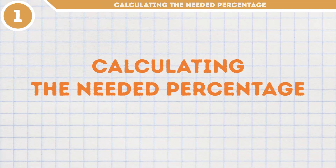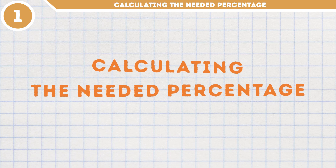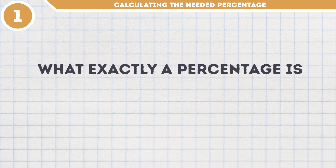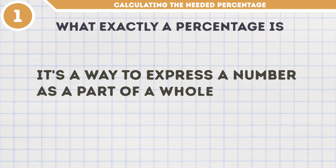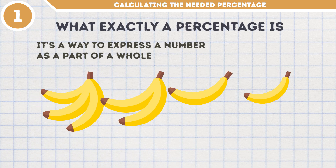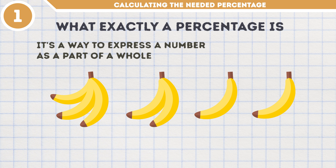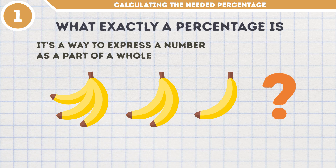Method number 1: Calculating the needed percentage. Before we start crunching numbers, it's important to understand what exactly a percentage is. Mathematically speaking, it's a way to express a number as a part of a whole. Let's say, for instance, you bought 7 bananas and then gulped one down right away. What percent of your bananas have you eaten? This task may sound daunting at first, but it's way easier to solve than you think.